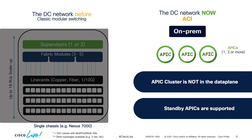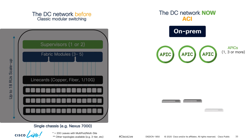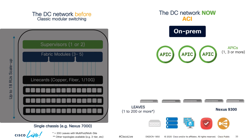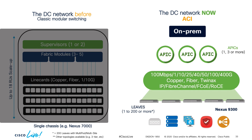Instead of line cards and a chassis, we follow a scale-out model using fixed Nexus 9000 top-of-rack switches called leaves. We connect servers, switches, routers, firewalls, and any other endpoint to this layer — just choose the right leaf model based on speed and media type, and APIC will automatically discover and configure it, running VXLAN as the data plane. There are multiple leaf models supporting speeds from 1G and 10G all the way to 25, 40, 50, 100, and even 400 Gigs. Fibre Channel running in NPV mode is also supported, meaning fewer ports and management points for both LAN and SAN.